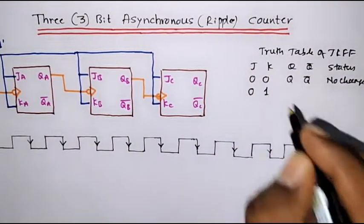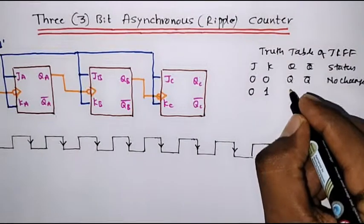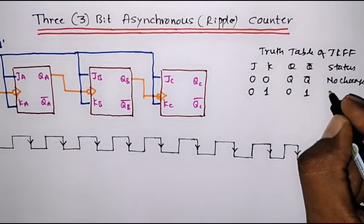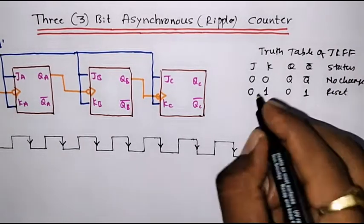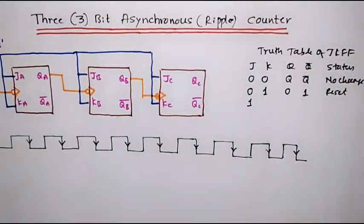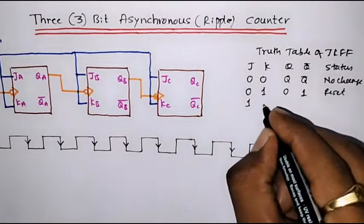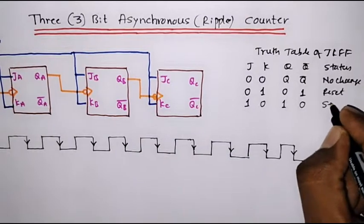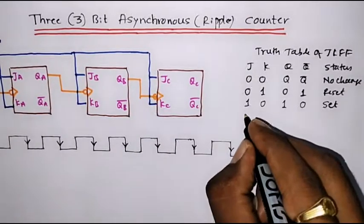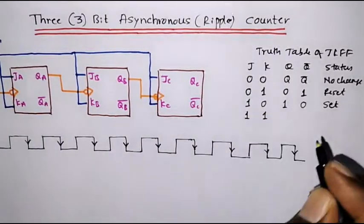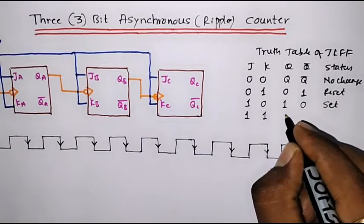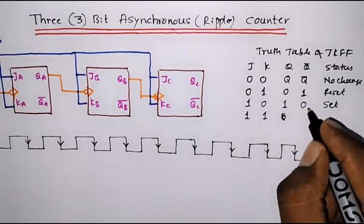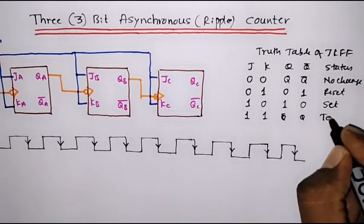When J is 0 and K is 1, the flip-flop is in reset state — that is, Q equals 0 and Q-bar is 1. When J is 1 and K is 0, Q is 1 and Q-bar is 0, that is the set state. But when J is 1 and K is 1, the flip-flop will toggle — Q will become Q-bar and Q-bar will become Q.